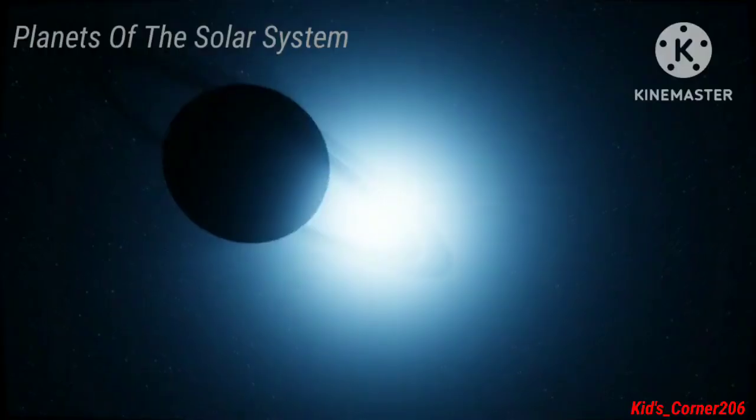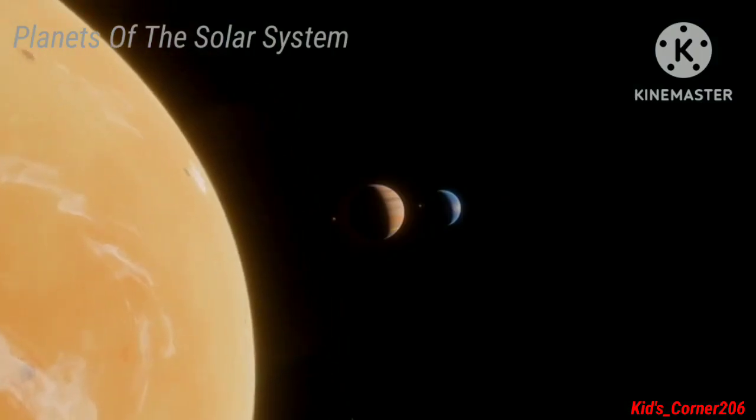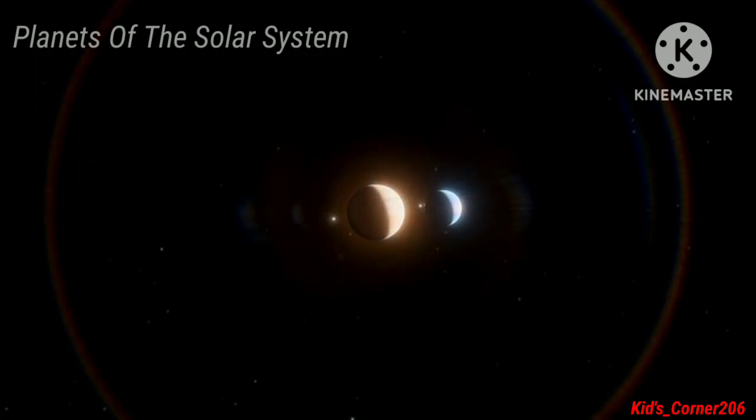The seventh planet in the solar system is Uranus. This planet consists of huge amounts of gaseous particles.